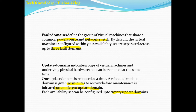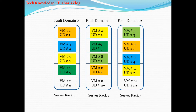Let's look at a diagram that explains this topic better. In this diagram we have three server racks marked as fault domain 0, fault domain 1, and fault domain 2. Update domains are spread across the fault domains. So we have update domain 1, 2, 3 on fault domain 0; update domain 1, 2 on fault domain 1; and update domain 1, 2, 3 on fault domain 2. The update domains cycle through — 1, 2, 3, 4, 5, then back to 1, 2, 3, 4, 5, and so on.